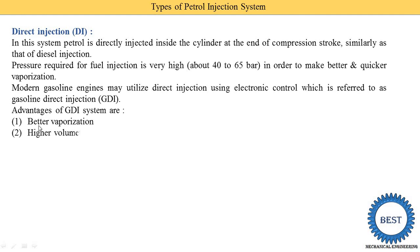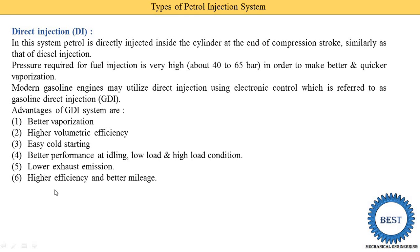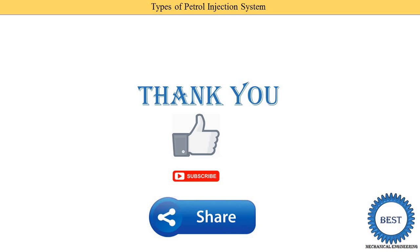The advantages of GDI are: better vaporization, high volumetric efficiency, easy cold starting, better performance at idling, low load, and high load conditions. In carburetors, controlling the air-fuel ratio across different load conditions is not easily possible, but in petrol injection systems we can control the air-fuel mixture for idling, low load, and high load. Fifth, lower exhaust emissions are achieved by controlling the air-fuel mixture. Finally, higher efficiency and better mileage are obtained.